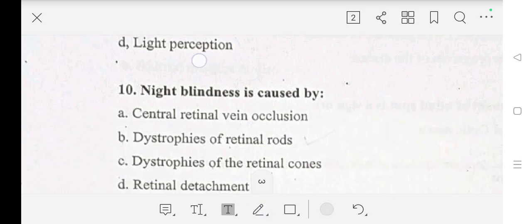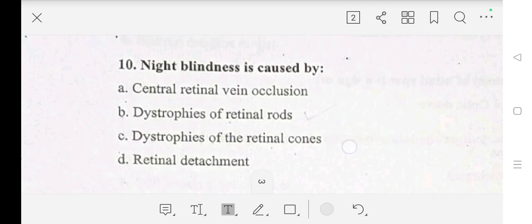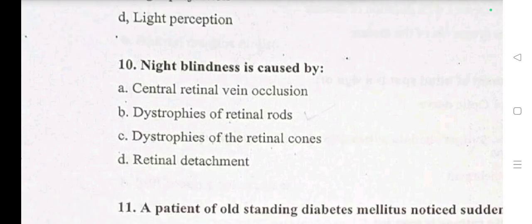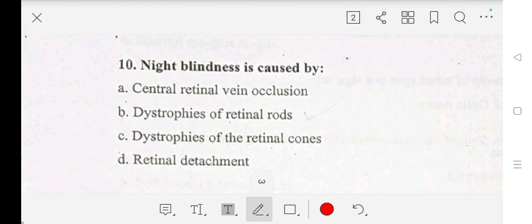Question number 10: night blindness is caused by — A: central retinal venous occlusion, B: degeneration of retinal rods, C: degeneration of retinal cones, D: retinal detachment. Our answer is B: degeneration of retinal rods.